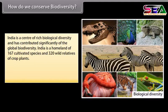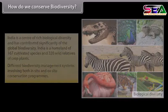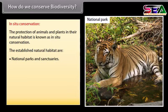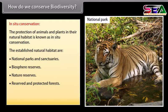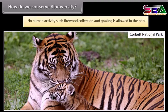India is a center of rich biological diversity and is home to 167 cultivated species and 320 wild relatives of crop plants. In-situ conservation refers to the protection of animals and plants in their natural habitat. Established natural habitats include national parks, sanctuaries, and biosphere reserves. National parks are highly protected by law — no human activity such as firewood collection or grazing is allowed. Sanctuaries are also protected but some human activities are permitted.